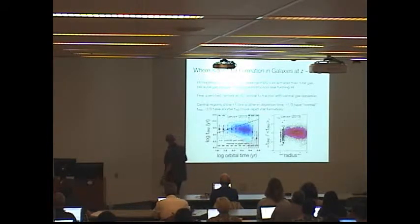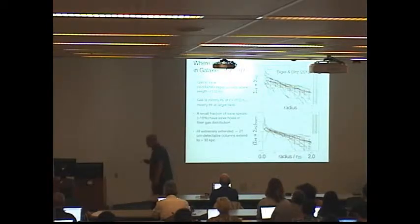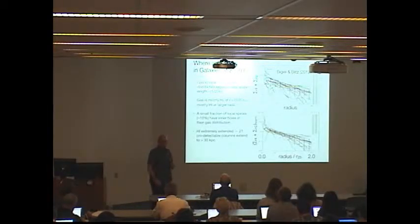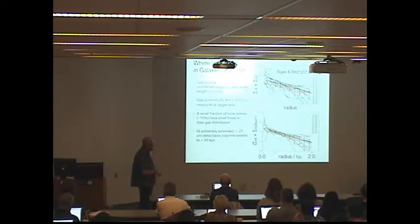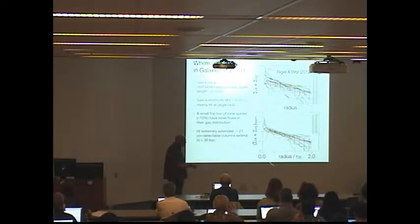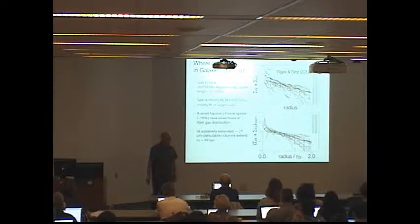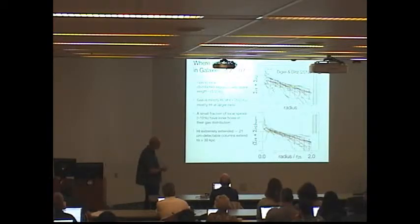How is gas arranged in galaxies in the local universe? In disks in the local universe, gas is distributed in an approximately exponential distribution. Here's total gas surface density versus radius, normalized to R25, and you see a fairly universal exponential profile. Most of the gas inside about half of R25 is molecular. Most of the gas further out is HI. The scale length is about half of R25.